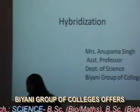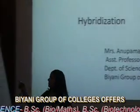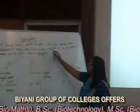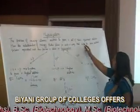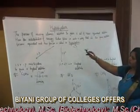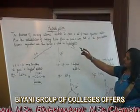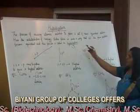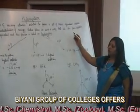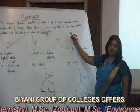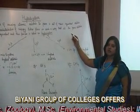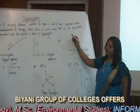Hybridization is the process of mixing of atomic orbitals to form a set of new equivalent orbitals. Here the redistribution of energy takes place in such a way that all the orbitals become equivalent, and this process is called hybridization.